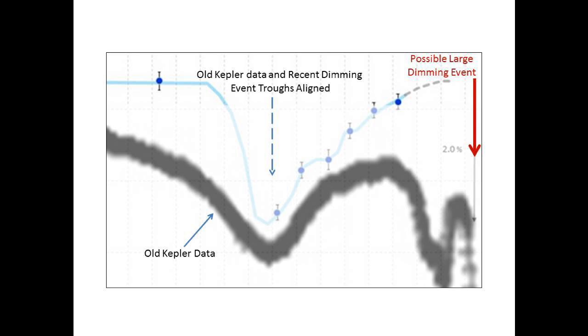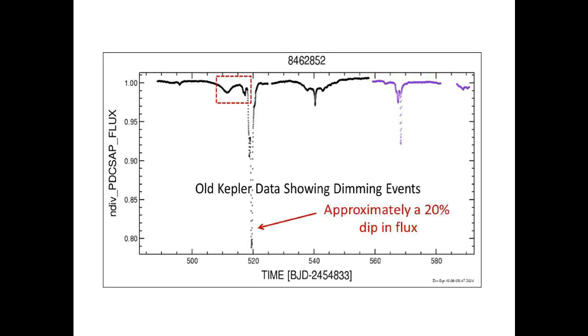This is the similar curve from the old Kepler data and was followed by a 20% dimming in the flux of Tabby's Star.